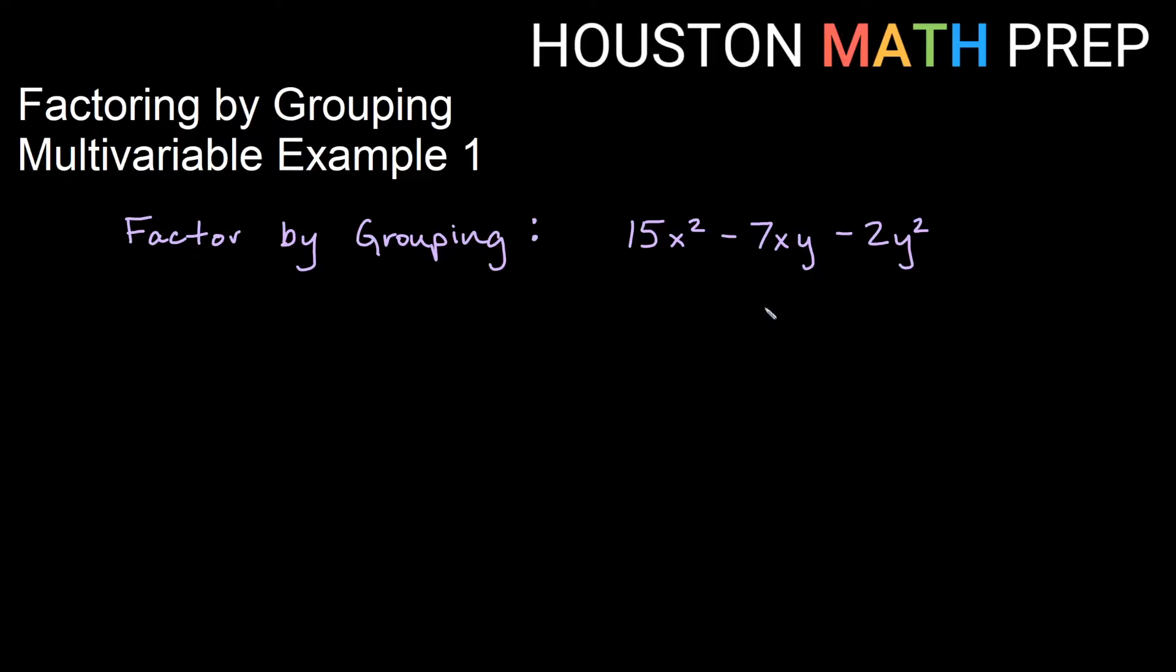It's not really that different when we're talking about factoring by grouping. I have 15x squared minus 7xy minus 2y squared. And the idea is still the same. If this factors by grouping, I think about my coefficients a, b, and c, and I will try to regroup my middle term as two like terms.